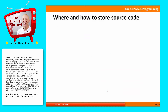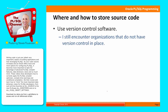Starting with the basics — where and how to store source code. First of all, hopefully this is totally basic, but make sure that you're using version control software with your code. Many development organizations still don't have version control in place. They might make copies of directories and give names to them by dates, which can lead to many problems like losing updates, not being able to go back to a previous version when you need to fix a bug. There are many version control software packages out there, some free, some commercial. Make sure you've got something in place.